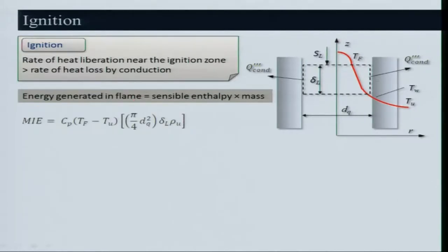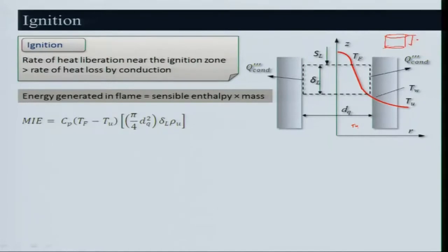Energy generated in the flame equals sensible enthalpy: C_p (T_f − T_u) × ρ × (π/4) d_q² × δ_l. This is the minimum ignition energy — it is the energy needed to raise the mixture in a cylindrical volume of diameter d_q and length δ_l from T_u to T_f. Once the mixture attains the flame temperature, it will propagate on its own.